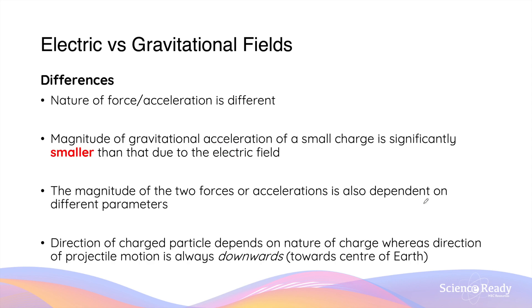There are also numerous differences between electric fields and gravitational fields and their effects on charged particles. First, the nature of the force and acceleration will be different — one is due to the electric field, while the other is due to a gravitational field. Furthermore, the magnitude of gravitational acceleration on a small charge is significantly smaller than that due to the electric field. Along the same line, the magnitude of the two forces depends on different parameters: the electric force depends on the charge of the particle, whereas the gravitational force depends on the mass of the particle.